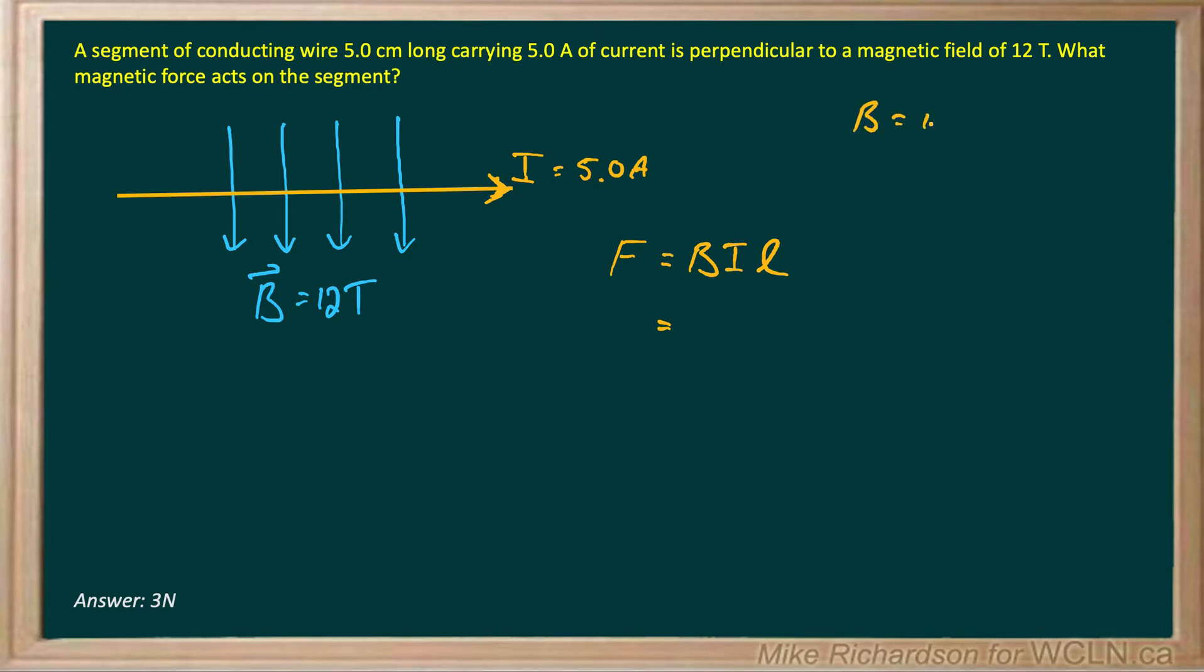We know what B is, it's 12 Teslas. We know what I is, it's five amps. And they tell you L. Now I want to explain L a little bit just so you don't get tricked on your quizzes or tests. First of all they say L is five centimeters so it has to be in meters, so we're going to use 0.05 meters. Now the L is the length of the wire that's actually in the magnetic field. So L is right here from there to there on my picture. So we're saying that little section, the length of the wire that's in the magnetic field, is five centimeters.